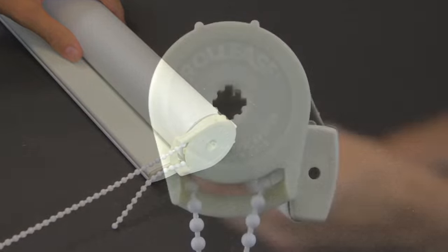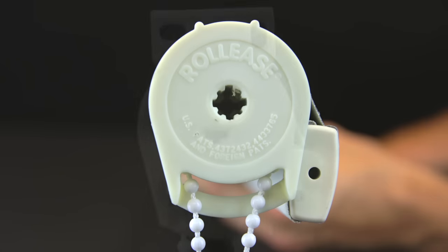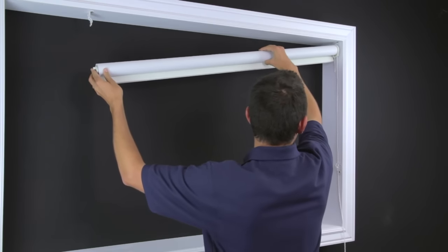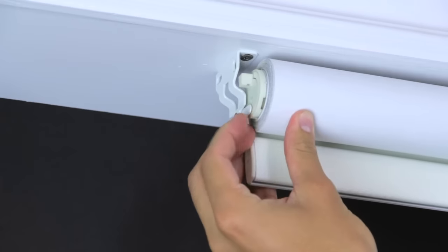Reinstall the clutch into the roller tube. Note how the clutch inserts onto the bracket, then mount the shade. Make sure to use the safety latch on the idle end as shown.